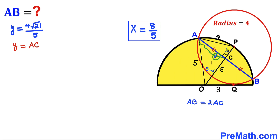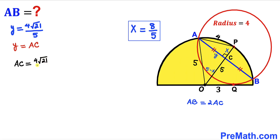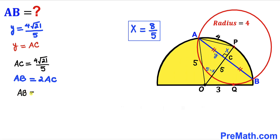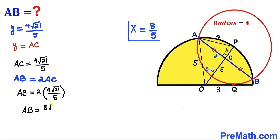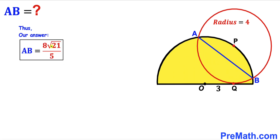Since AB = 2 × AC, we get AB = 2 × (4√21 / 5) = 8√21 / 5 units. This chord length AB is approximately 7.33 units. Thanks for watching — please don't forget to subscribe to my channel for more exciting videos. Bye!